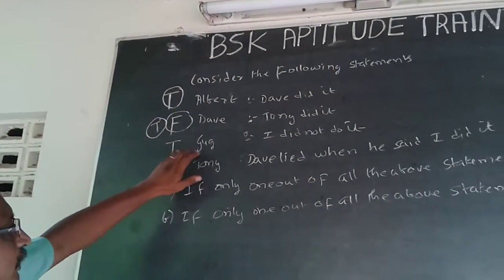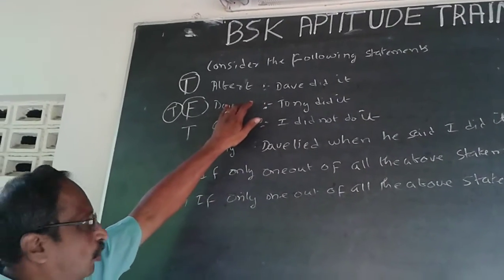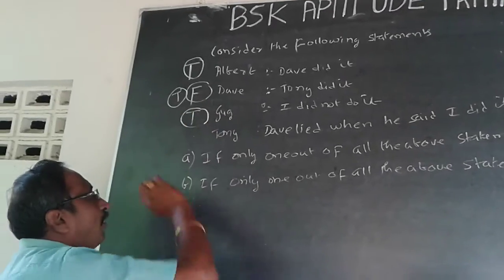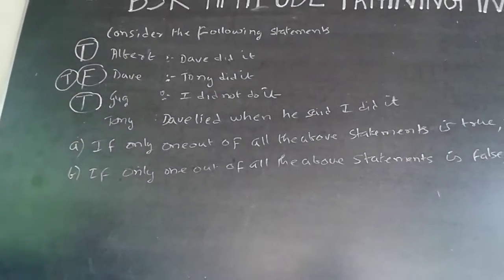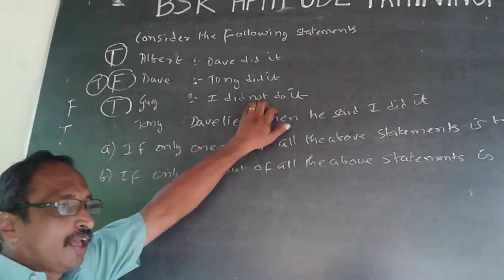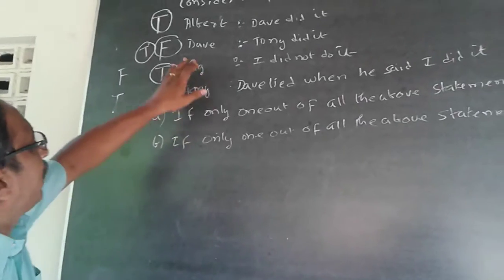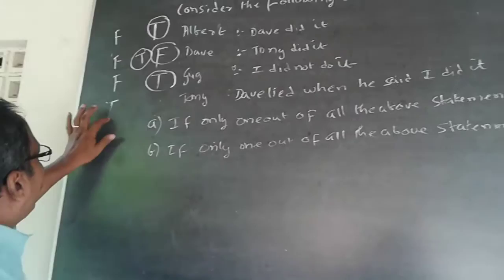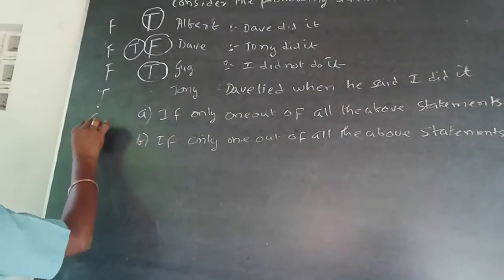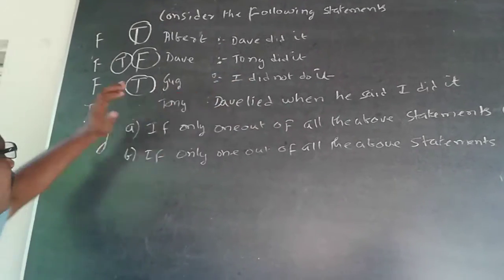I will check for Gug to be true. If Gug is true and says I did not do it, the other three must become false. But the moment Tony is false — he says Dave lied — then Dave becomes true. And if Dave is false, Tony becomes true. So again I have two true statements; therefore Gug is also not the one true statement. That means Tony must be true. The other three become false. Gug says I did not do it — if that is false, Gug has done it. Automatically Albert and Dave become false too. So for condition A: one true, three false — the answer is Gug.